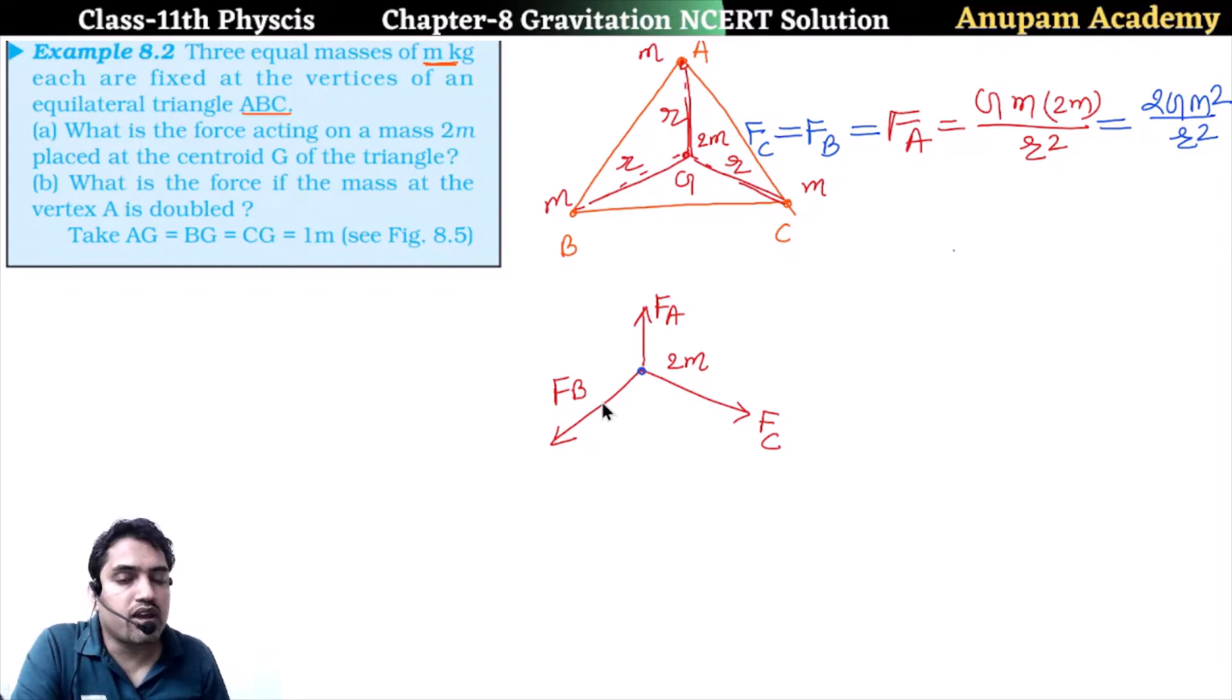If we talk about horizontal force, horizontal component and vertical component. Horizontal component is F_C component. F_C and this angle will be 30 degrees. This angle also will be 30 degrees. So if we resolve it, F_C cos 30 degrees.